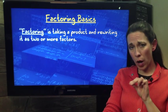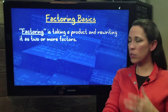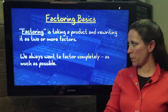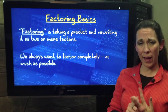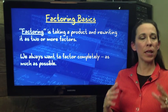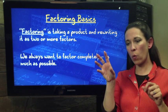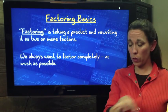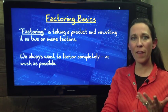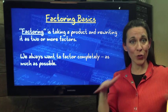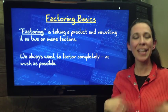So factoring is taking a product and rewriting it as two or more factors. Now, we also always want to factor completely, meaning as much as possible. We don't want to just factor out one piece when other pieces can go a little bit further. Think of prime factorization when you do the prime factor tree and you keep going as far as you can.